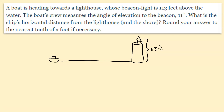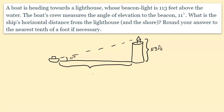The boat's crew measures an angle of elevation of 11 degrees, so there's a line from the boat to the beacon and that angle of elevation is 11 degrees. What is the ship's horizontal distance from the lighthouse? That distance from the ship to the lighthouse is what we're trying to find — we call it x. The lighthouse makes a right angle with the horizon, giving us our right triangle. The reference angle is 11 degrees, the opposite side is 113 feet, and the horizontal distance is the adjacent side.